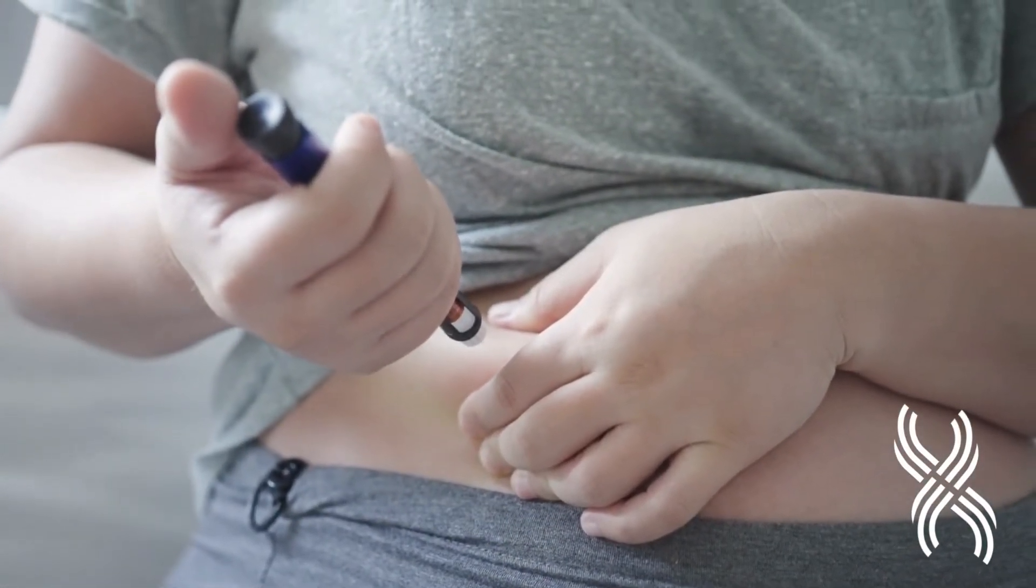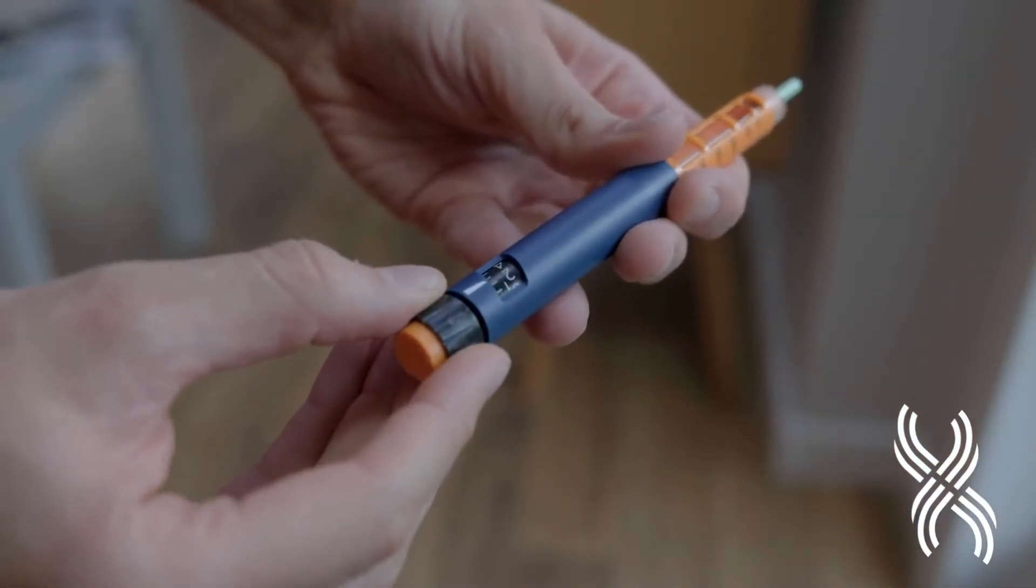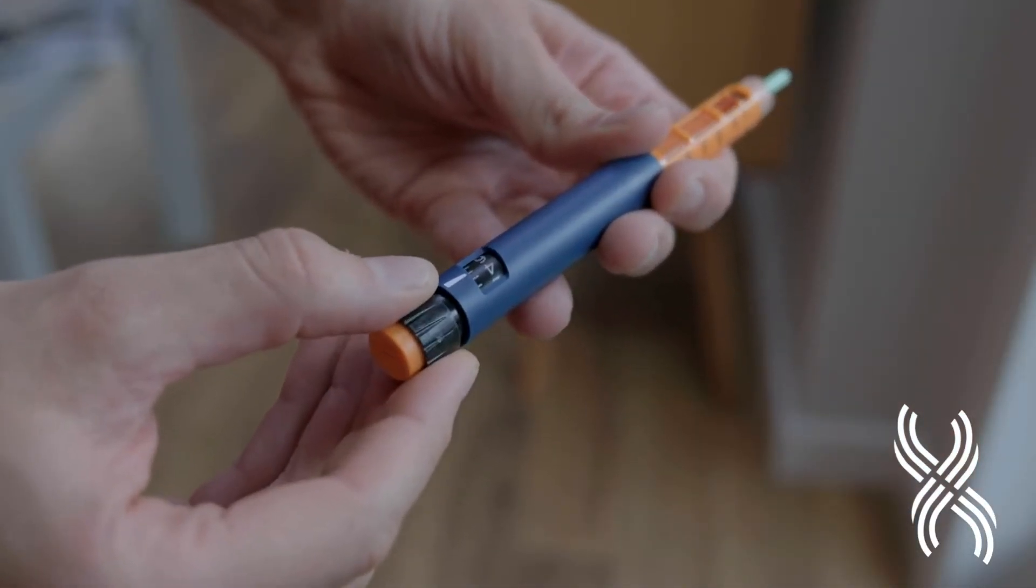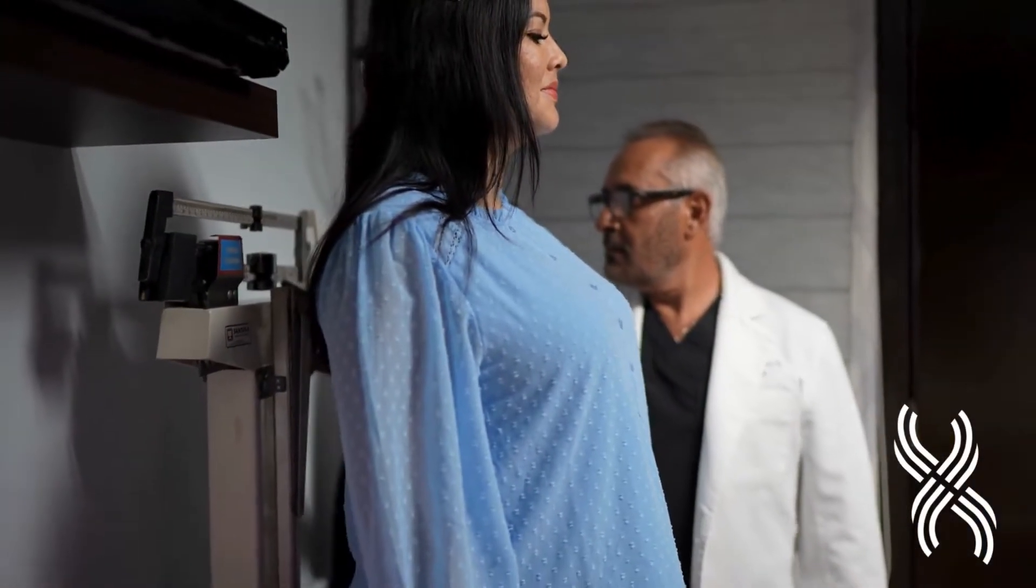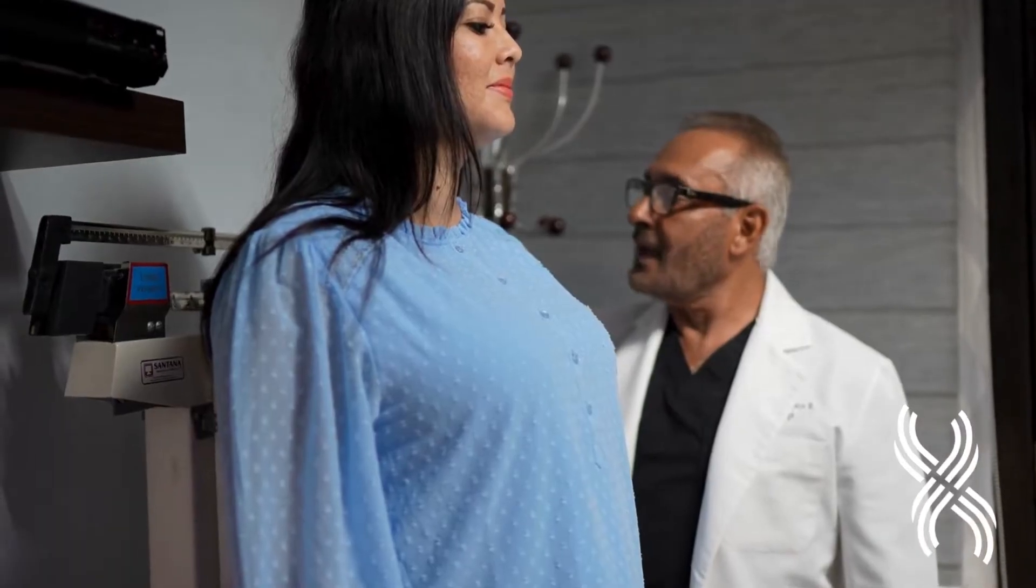GLP-1s work by mimicking a natural hormone that stimulates insulin release while also reducing appetite and slowing digestion. This dual action makes them a powerful tool not only for managing blood sugar levels, but also for promoting weight loss.